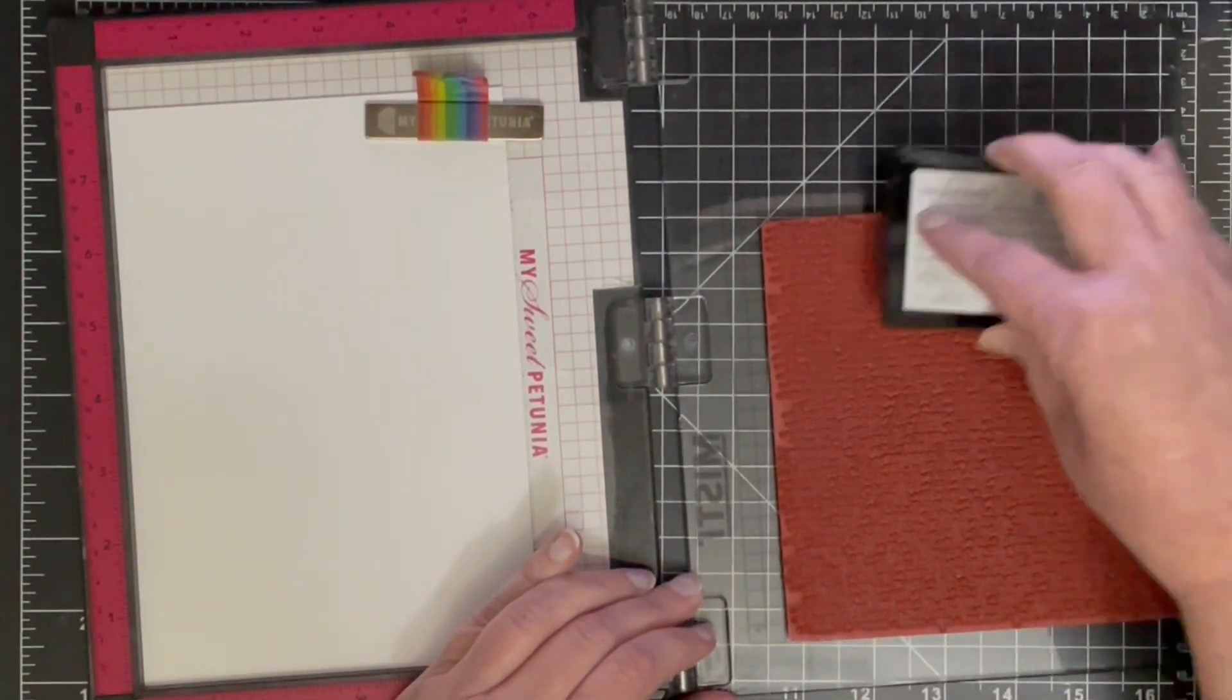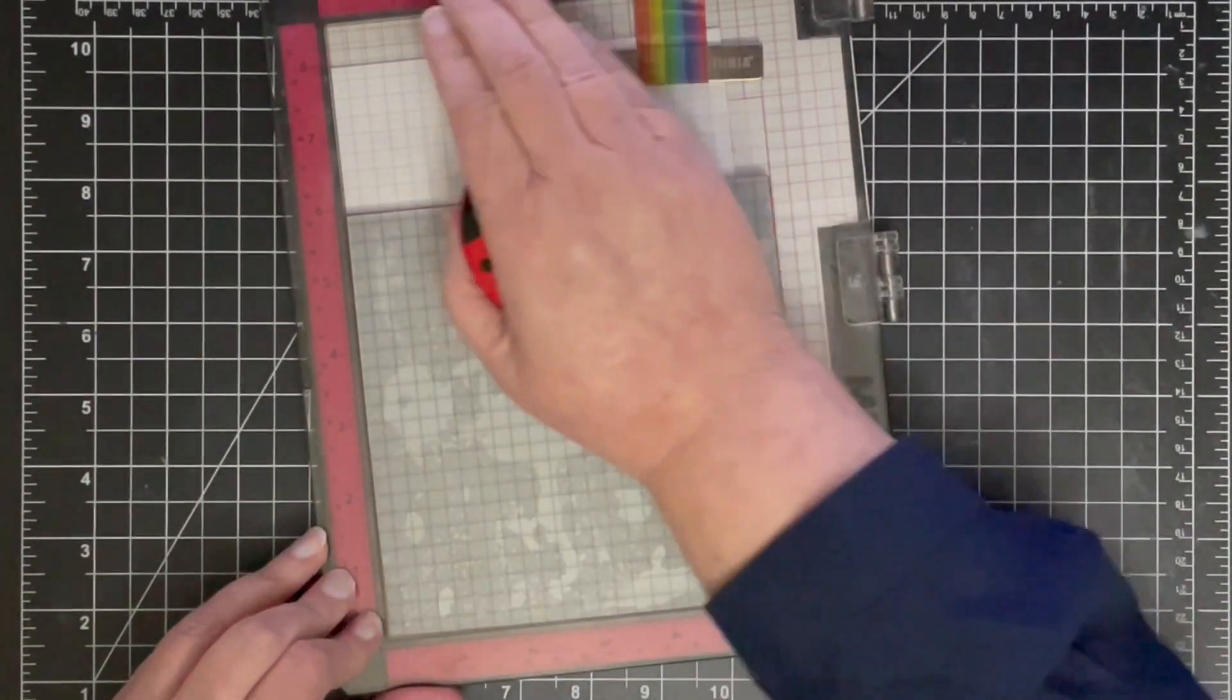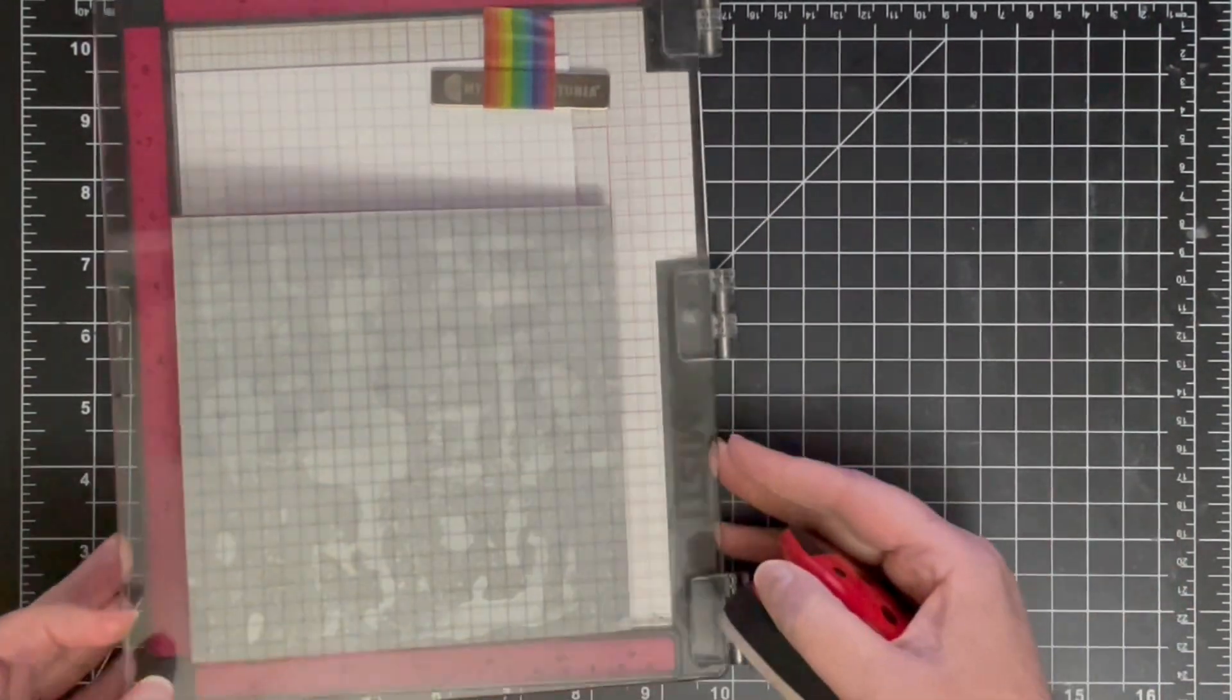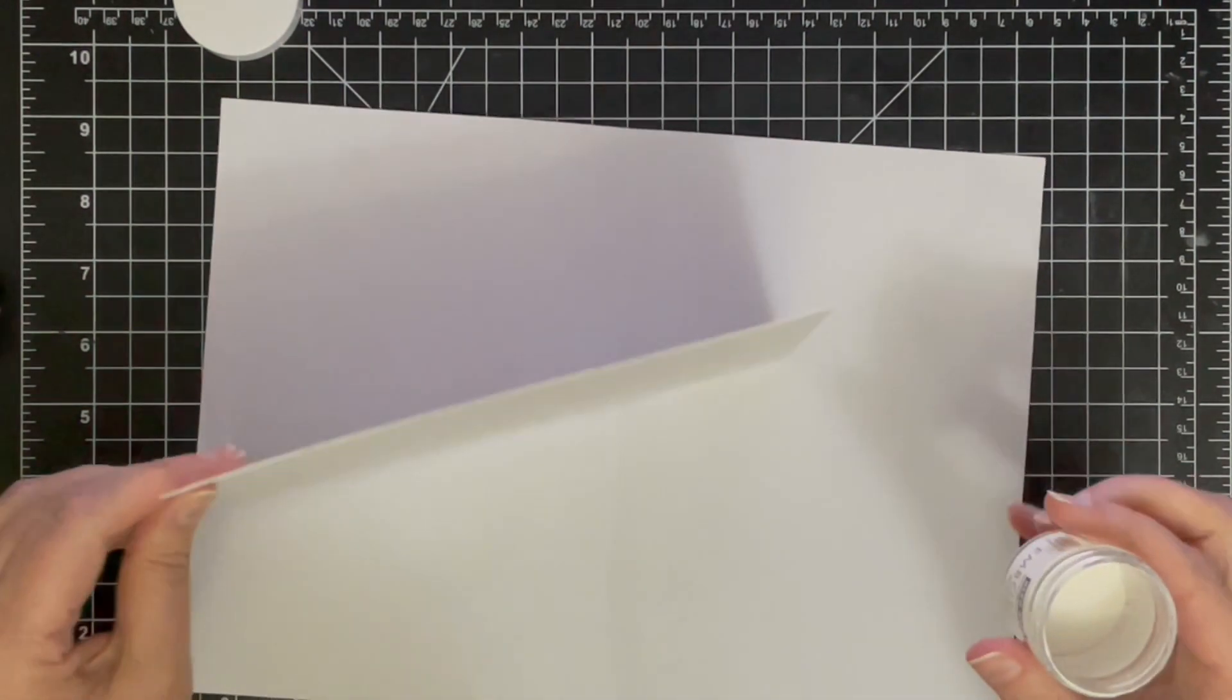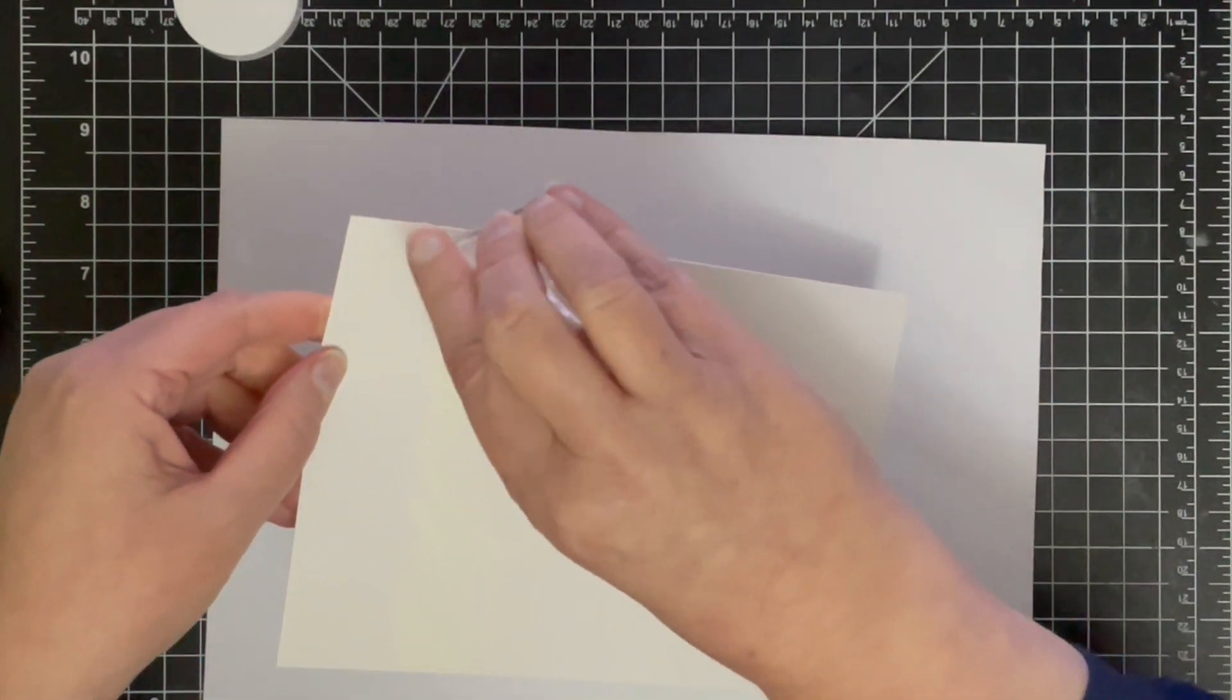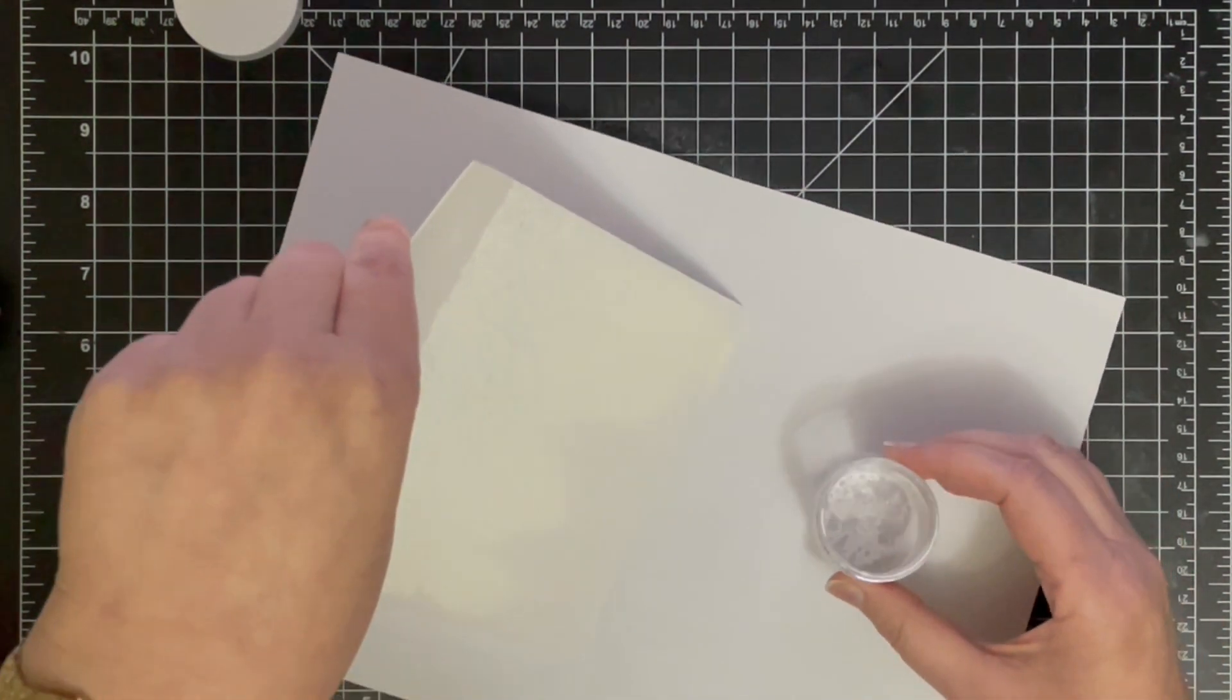So I'm stamping it in Versamark ink here and I'm going to stamp a couple of times, which I often do with Versamark because it's really hard to see whether you've got a really good impression. I'm using my little ladybird pressure tool here, and I'm going to be heat embossing this.